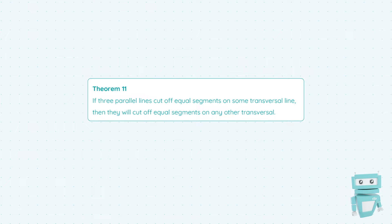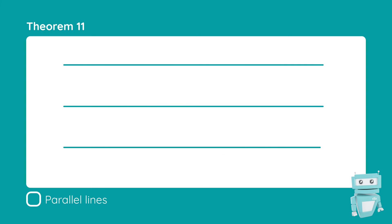I think the trickiest part of this theorem by far is just the wording, in particular what's meant by the word transversal. A transversal line is just a line which passes through two or more other lines at distinct points on the same plane.